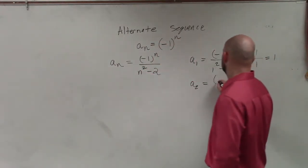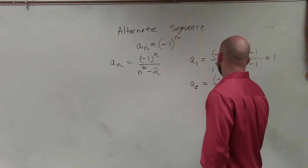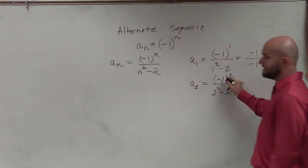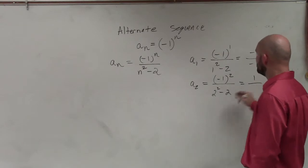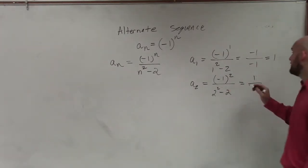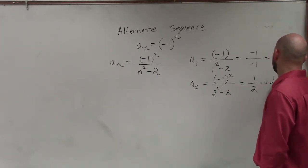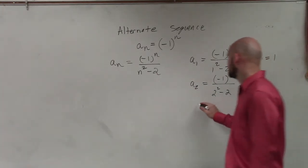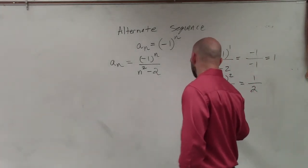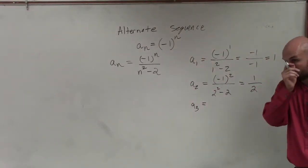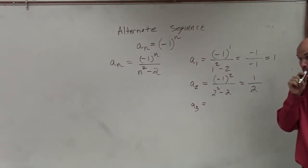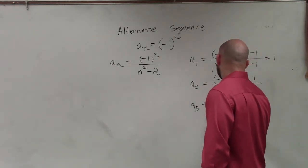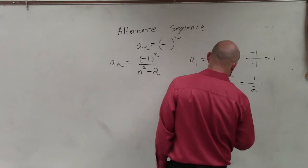Then you go to n equals 2: negative 1 squared over 2 squared minus 2. Negative 1 squared is now positive 1. 2 squared is 4. 4 minus 2 is 2. For a sub 3, a student answers negative 1 over 7.